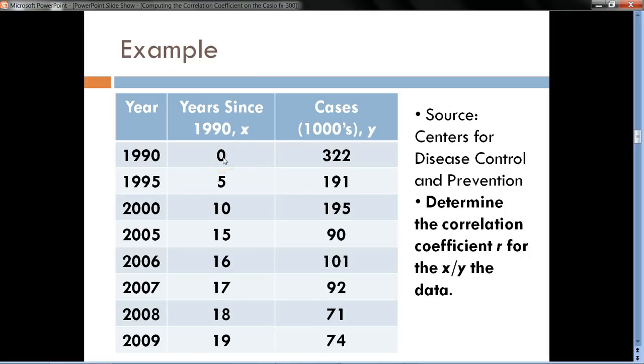So notice here, in 1990, X would be 0. In 1995, X would be 5. In 2000, X is 10, and so forth. So notice here, the CDC didn't record the number of cases every year. It's been particular in the 90s, so that's why there are some gaps in some of the numbers there. Y, our dependent variable, are the number of cases in thousands since 1990.